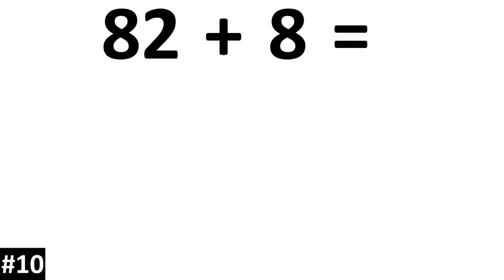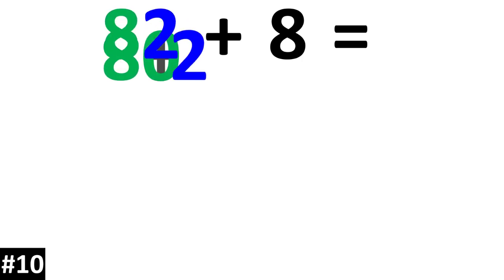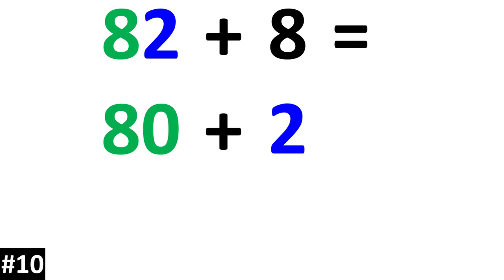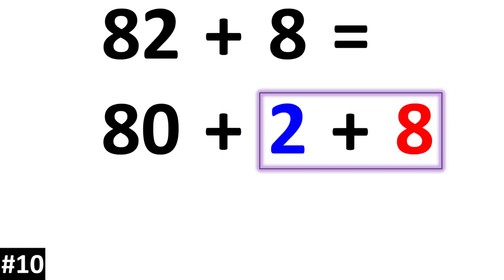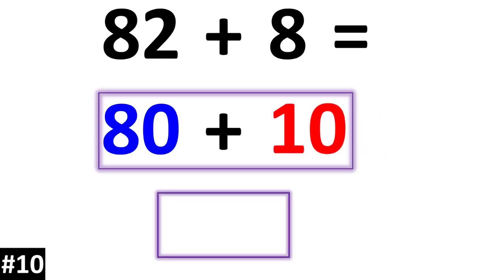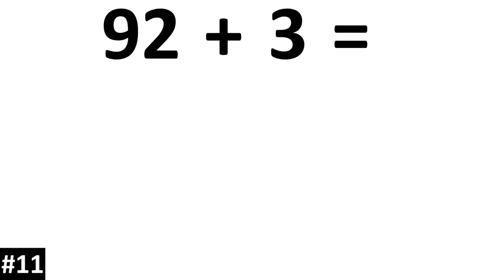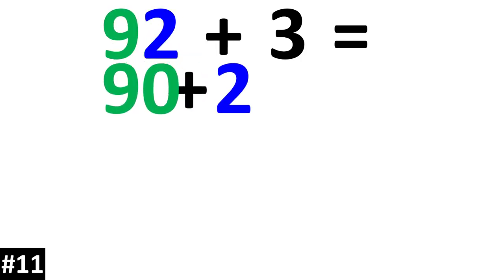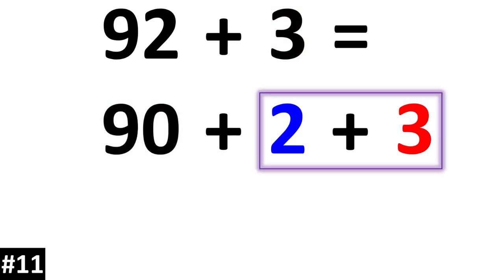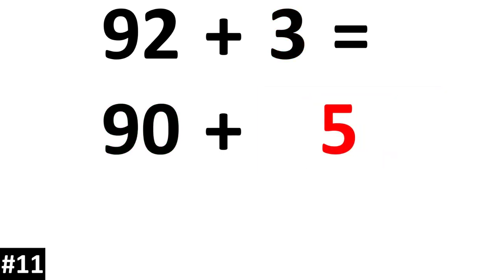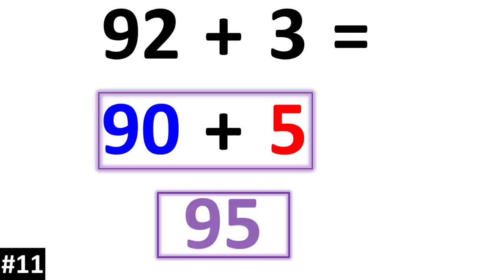82 plus 8. 82 is the same thing as 80 plus 2. If we add an 8, 2 plus 8 gives us 10. And 80 plus 10 is 90. Next, 92 plus 3. 92 is the same thing as 90 plus 2. If we add the 3, we have 2 plus 3, which gives us 5. 90 plus 5 is 95.